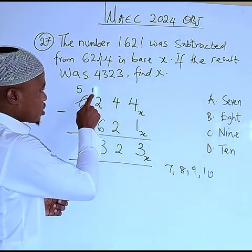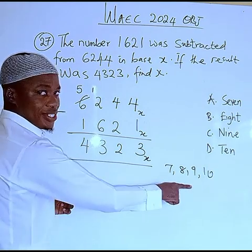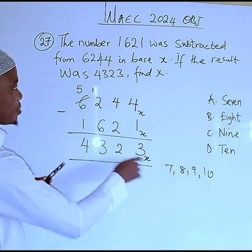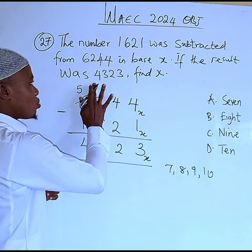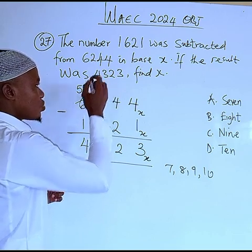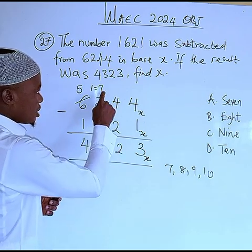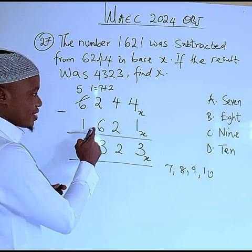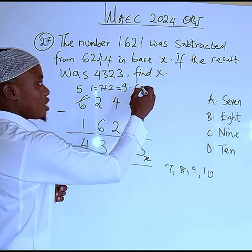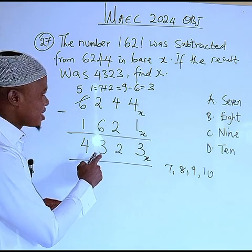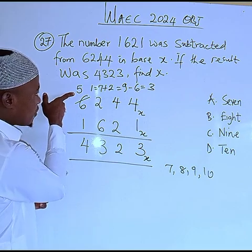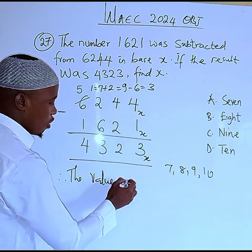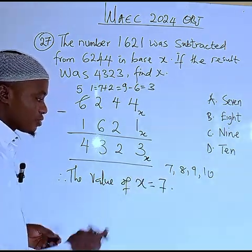When we borrow, instead of adding 10 (as in base 10), we add the value of our base. Let's test base 7: the borrowed value is 7, so 7 plus 2 equals 9. Then 9 minus 6 equals 3 — and that matches the 3 in our result. Then the remaining column: 5 minus 1 equals 4, which also matches. So x equals 7.